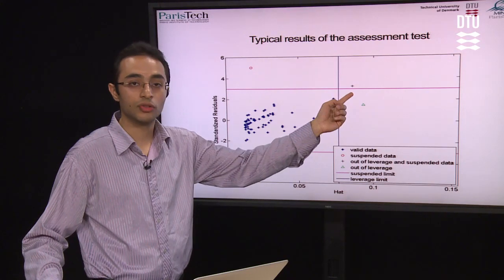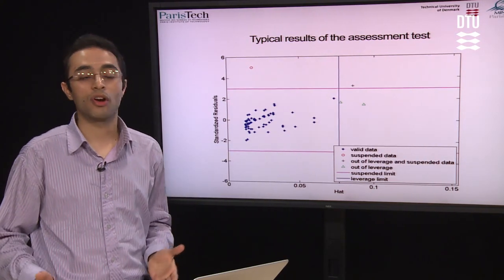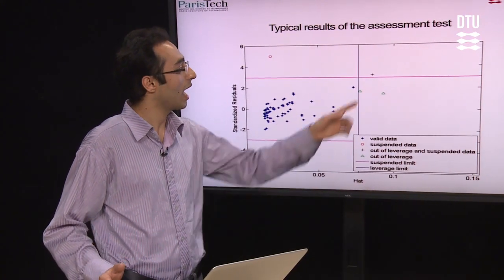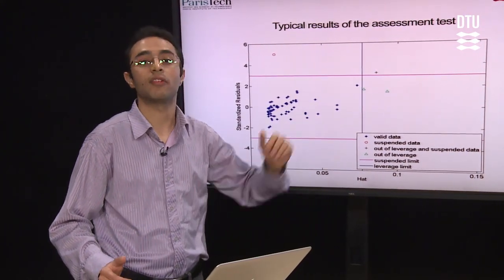And the black cross represents that the data are neither out of leverage, nor out of the applicability domain of our model.